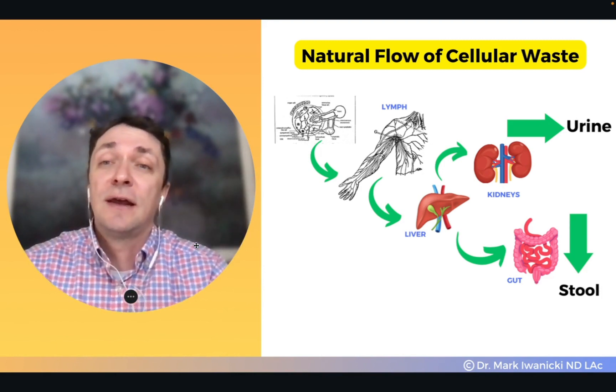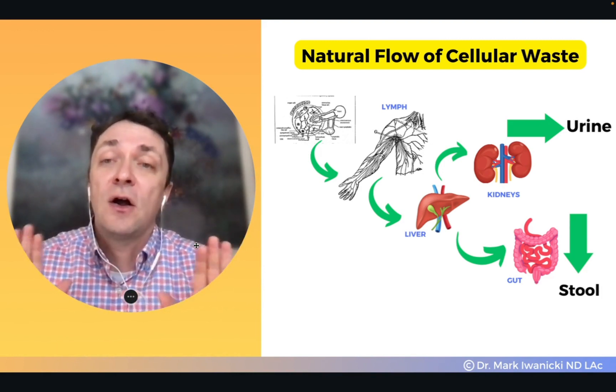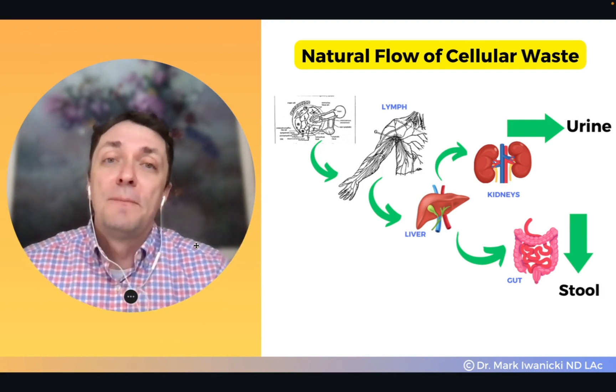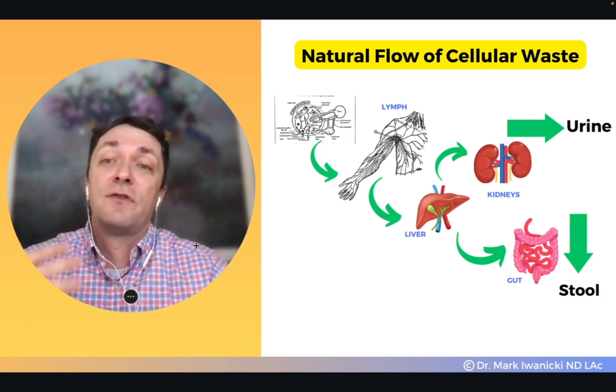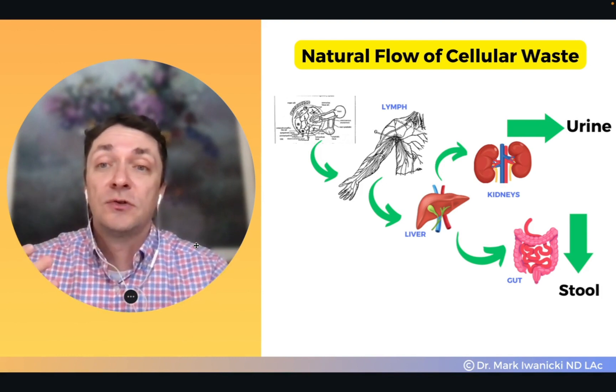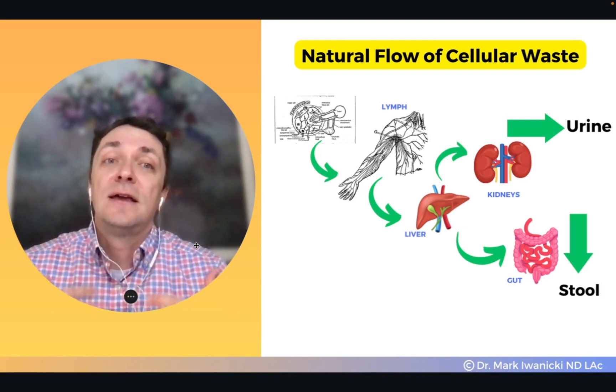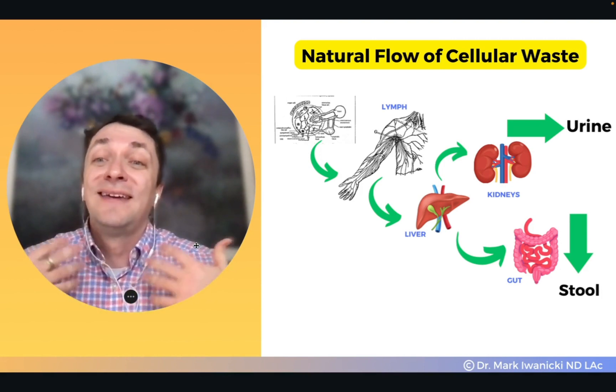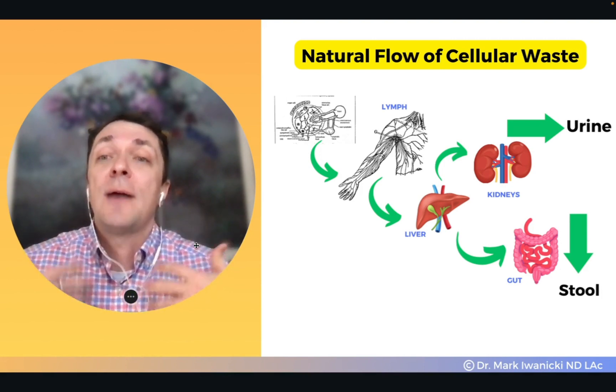We have two main pathways for elimination. The skin through sweating is also another way we can get rid of waste products. But for the majority of the day, for the vast majority of the waste disposal process, it is the liver and kidneys processing via urine and stool. Gas exchange via CO2 happens via the lungs.